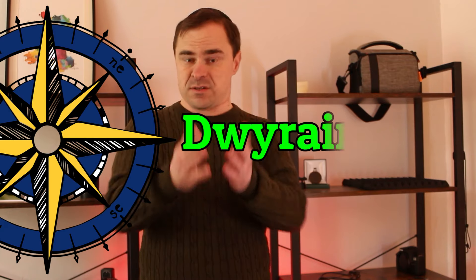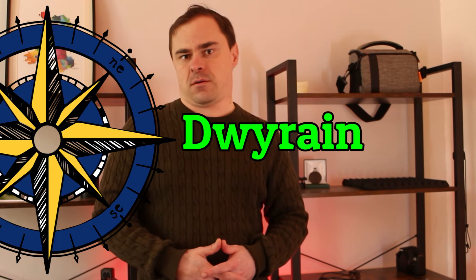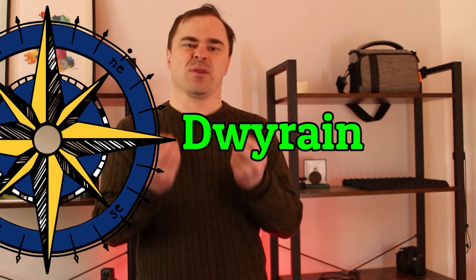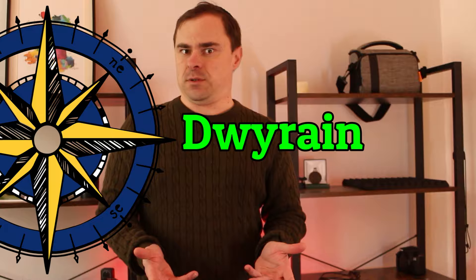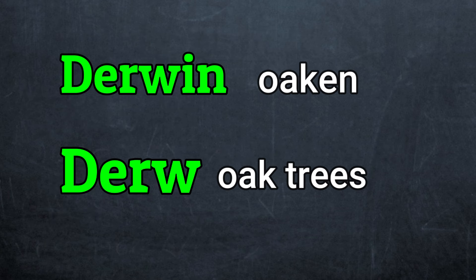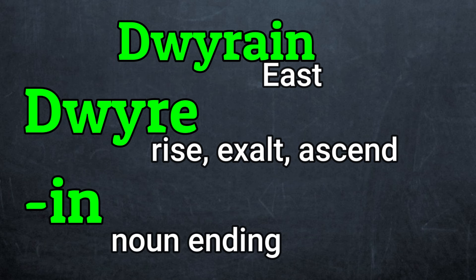The east itself — Dwyrain. This has somewhat vaguer meanings and we have to rely on earlier poetry. Dwyrai means to rise up, sometimes to exalt someone. And the -in ending makes it into a noun. So like darwen, meaning oaken — made of oak, from dar, oak. Dwyrain — the place of rising.